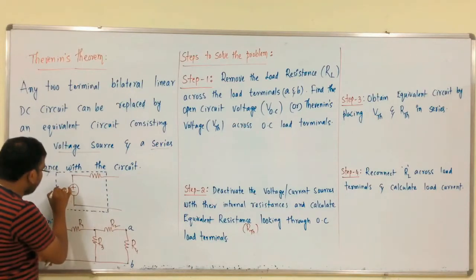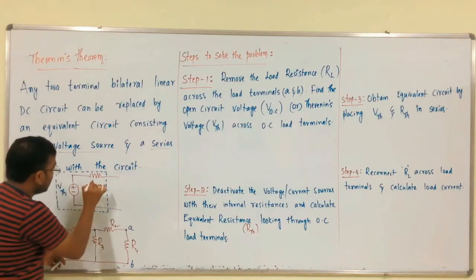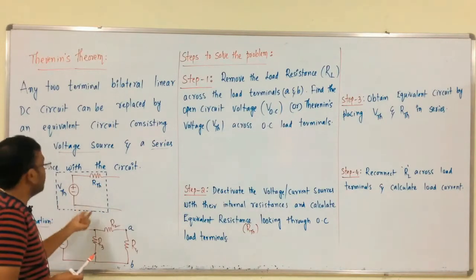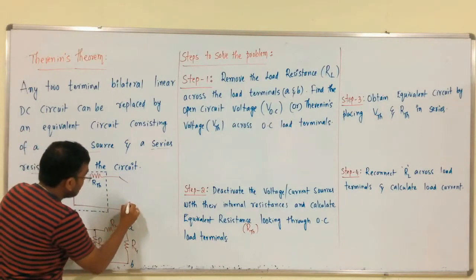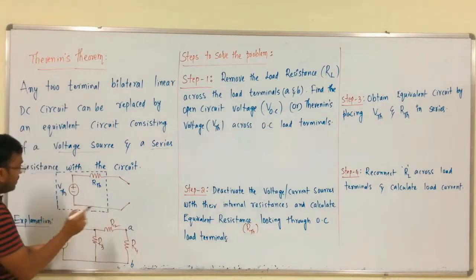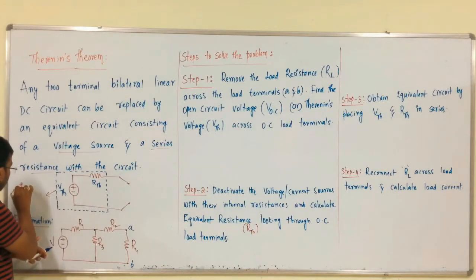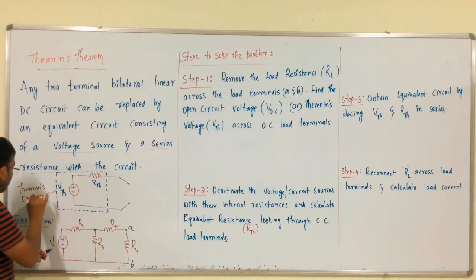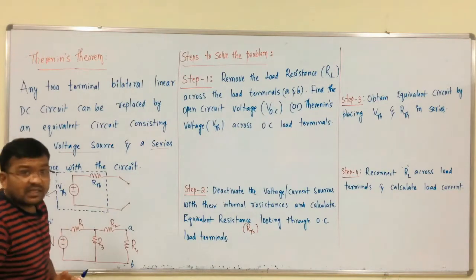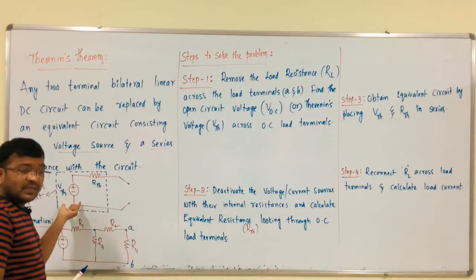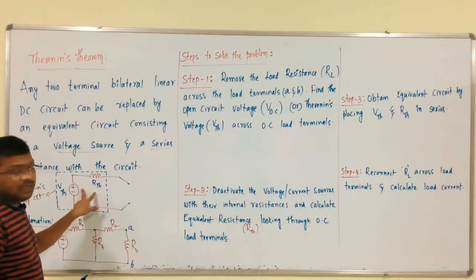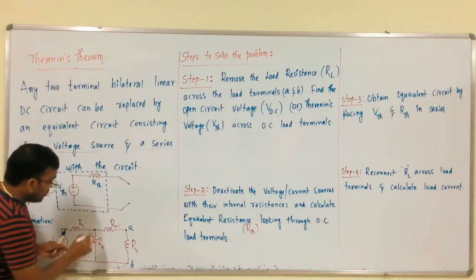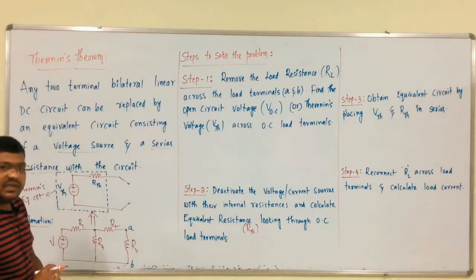This is V_TH and this is R_TH. We will discuss what is V_TH and what is R_TH. This is the Thevenin's equivalent circuit. A simple voltage source is connected in series with the Thevenin's resistance. Thevenin's equivalent circuit means we have to reduce the given circuit into this form.